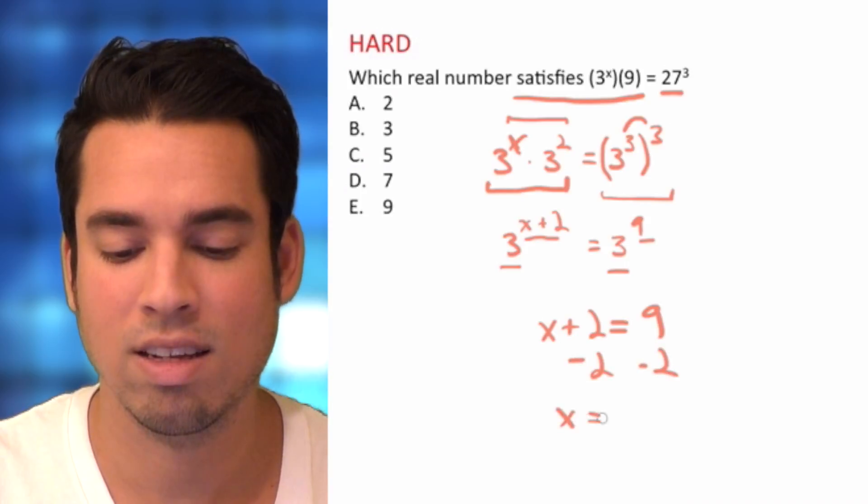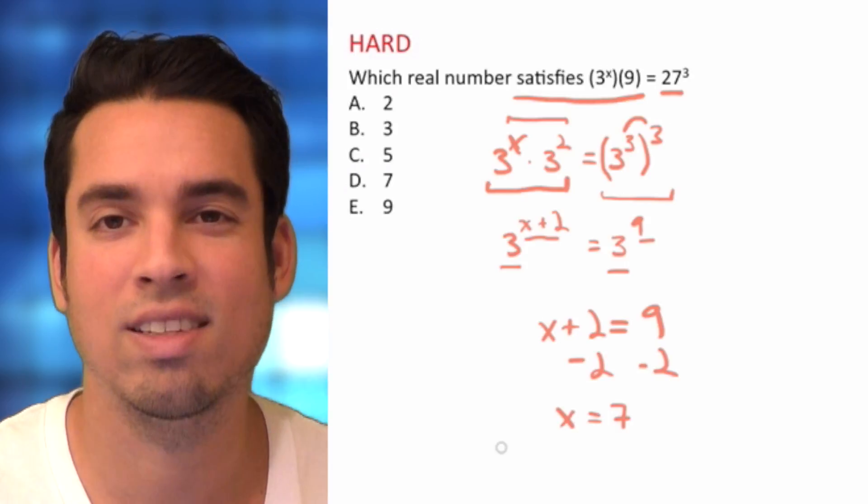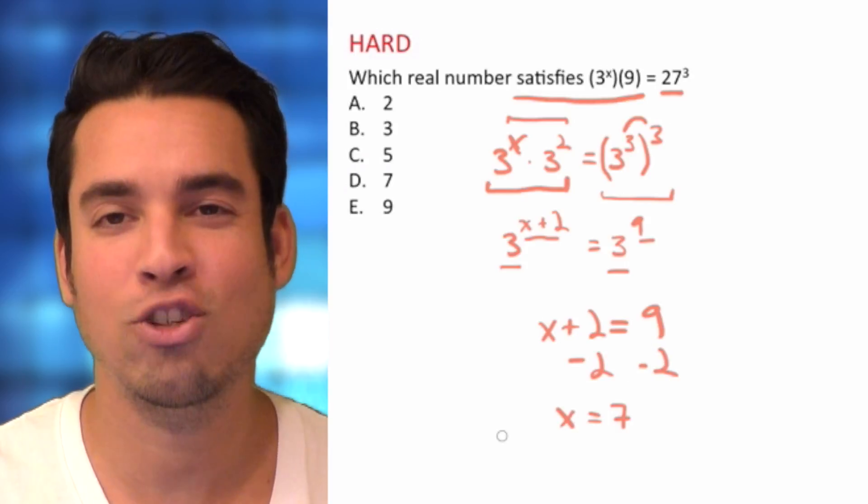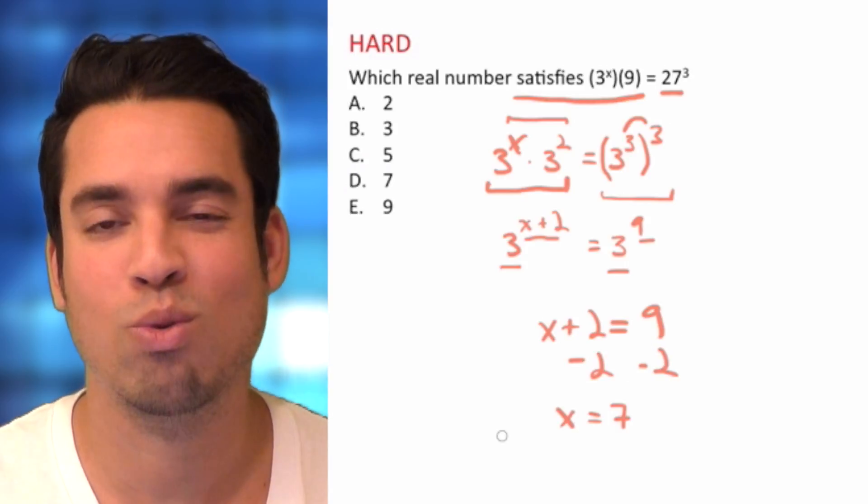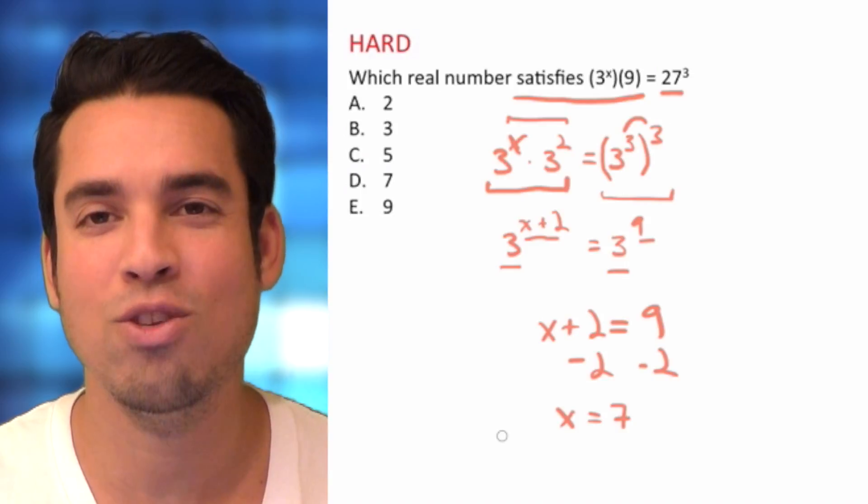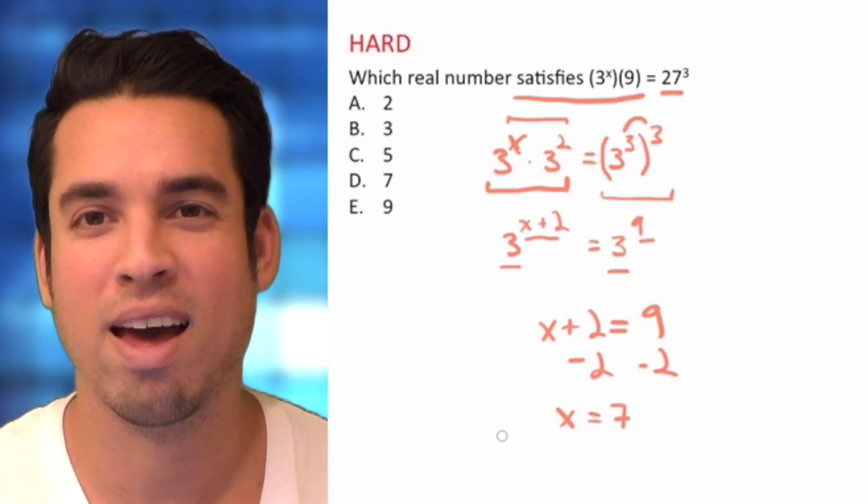and we've got x equals 9 minus 2, which is 7. So it's actually not that long of a problem. It just requires you to know the nuances of the rules with exponents.